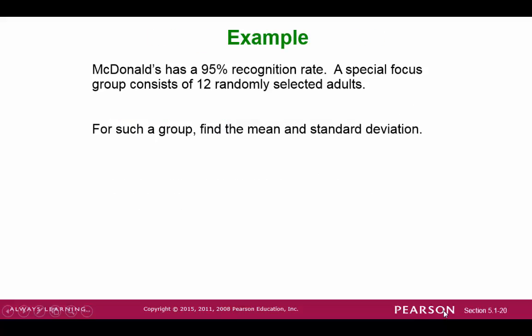Let's take a look at an example. Suppose we know that 95% of the people can recognize the McDonald's symbol. Suppose you select 12 adults. What is the expected value or the mean? Also, find the standard deviation. We have n, which is 12, and the probability, which is 0.95.